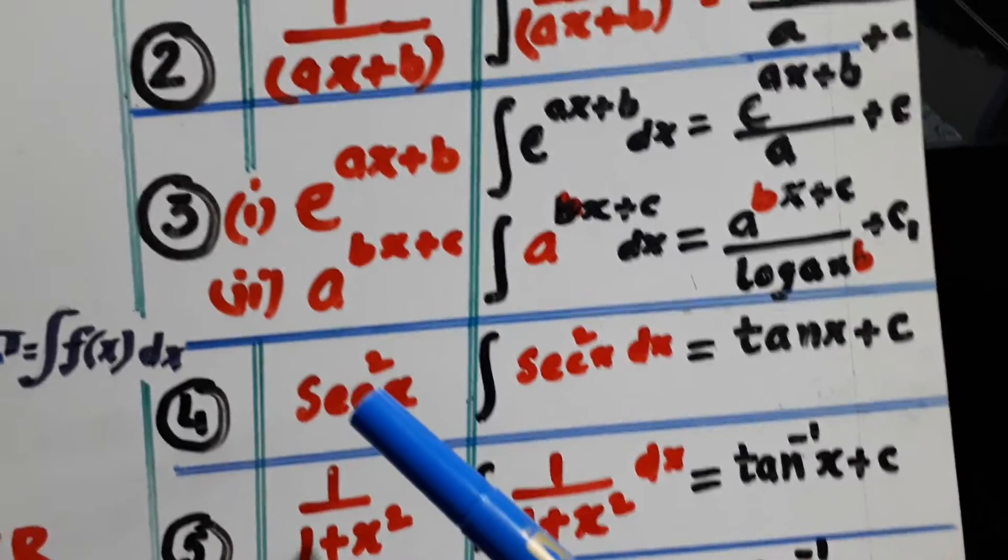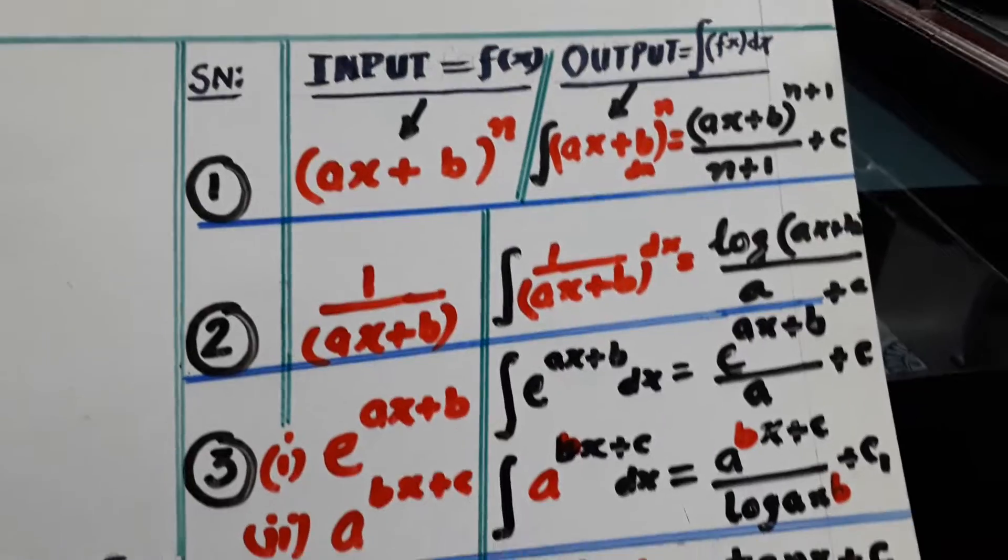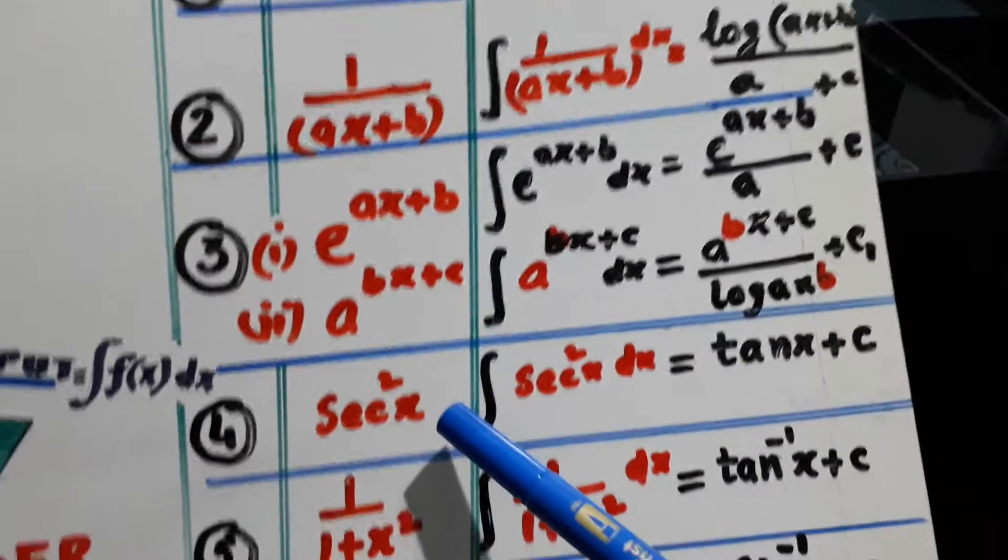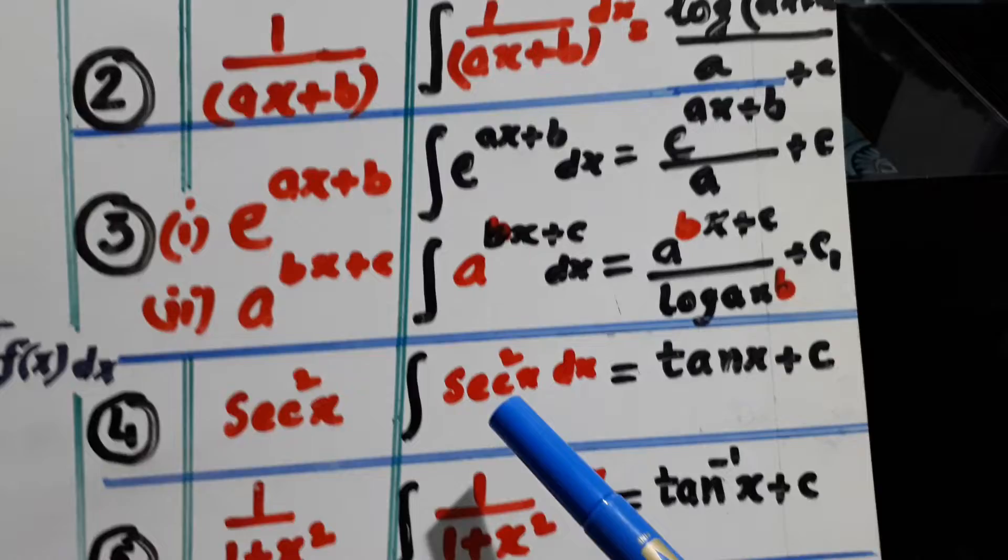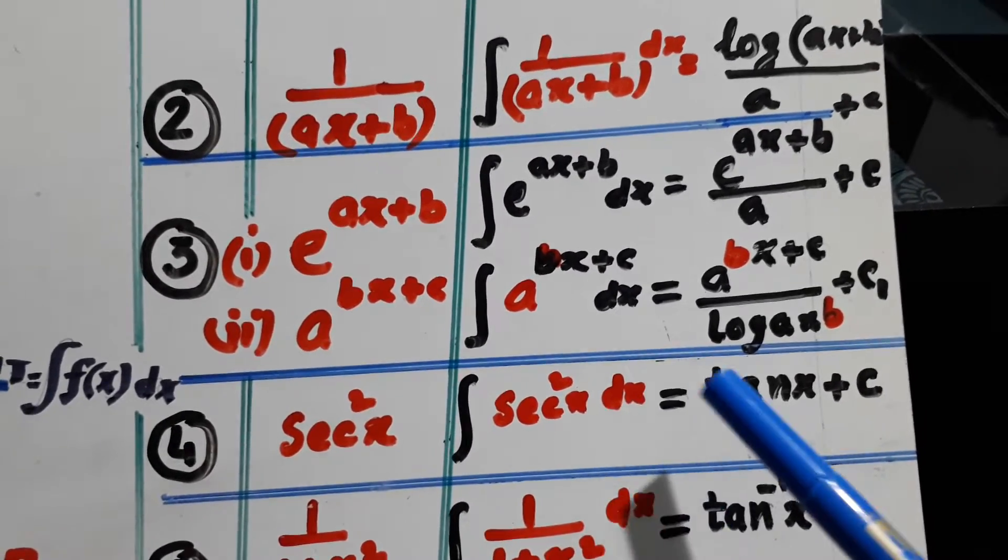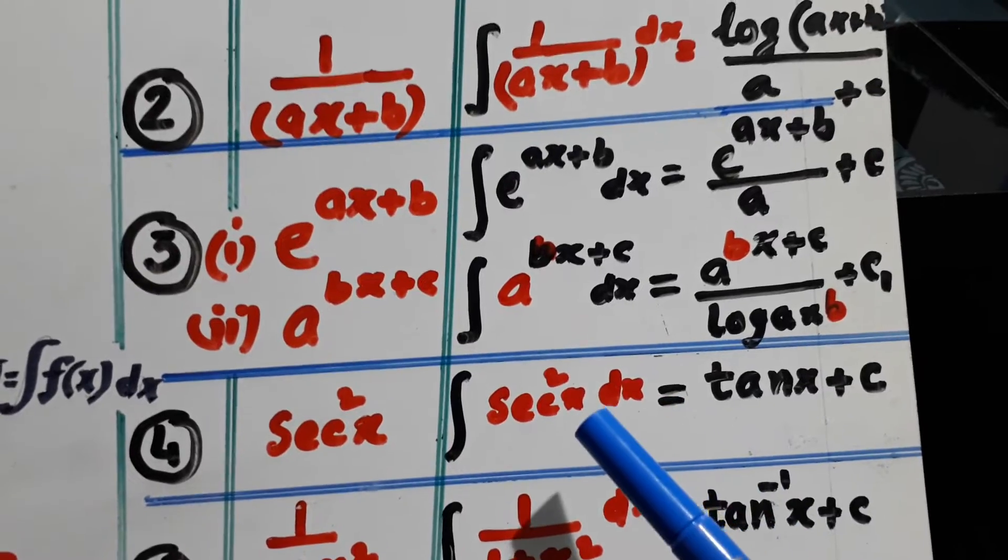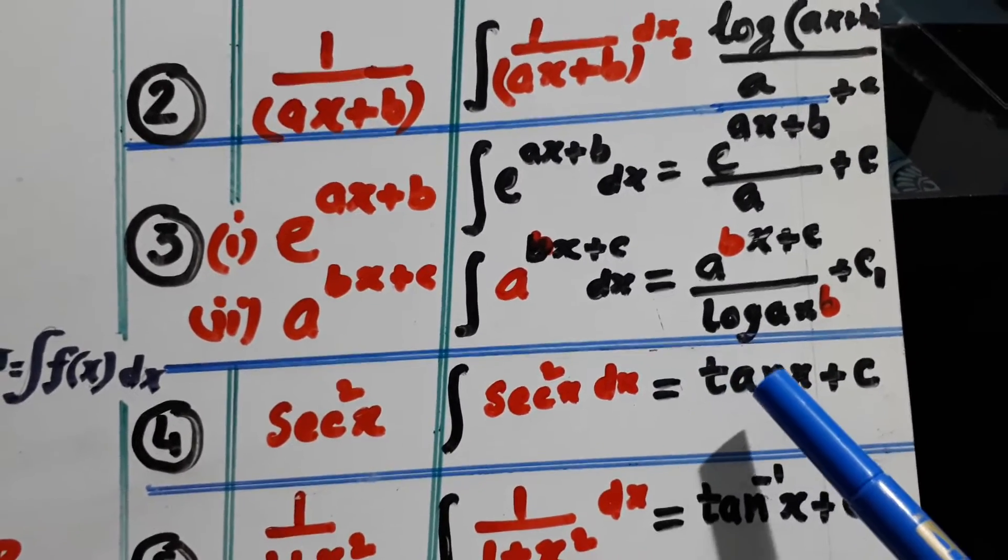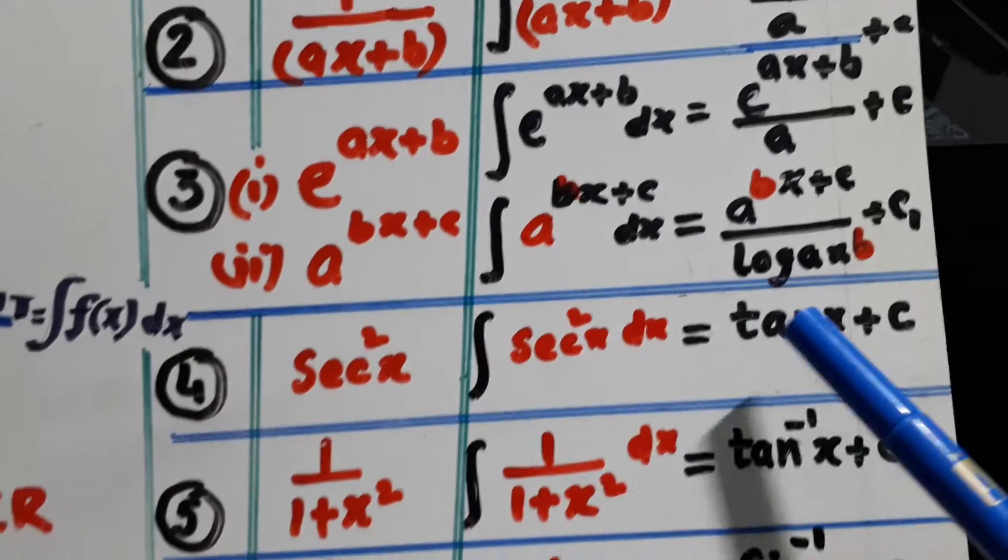Now, fourth is: input is sec²x. Output is integration of sec²x dx. And we know that sec²x is the derivative of tan x. The answer will be tan x plus c.